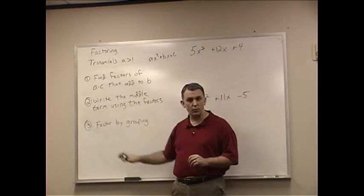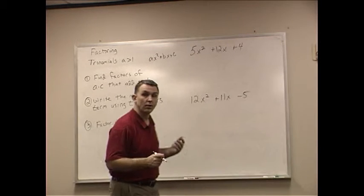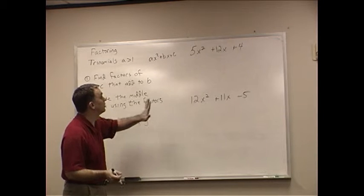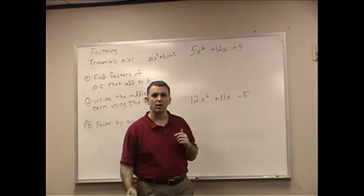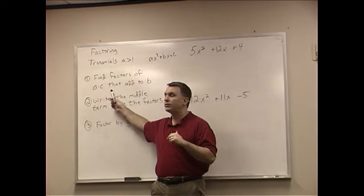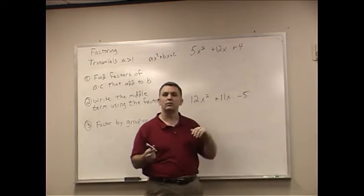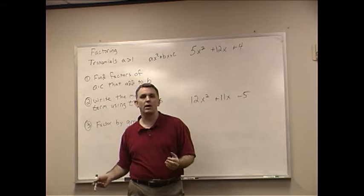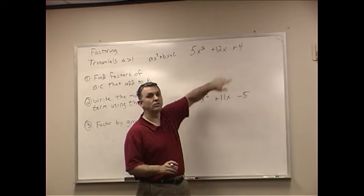Let's work through this. I've got two examples. I've got 5X to the second plus 12X plus 4. The first part, find factors of A times C that add to B. Well, A times C is 20. 5 times 4 is 20. I need factors of 20 that add to B12.